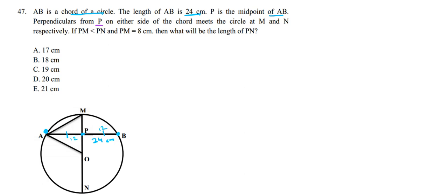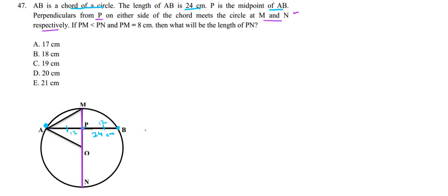Perpendiculars from P on either side of the chord meet the circle at M and N respectively. We draw a perpendicular upward and a perpendicular downward from point P, which meet the circle at points M and N. So we have two chords: PM and PN. We are given that PM is 8 centimeters, and we need to find the length of PN.